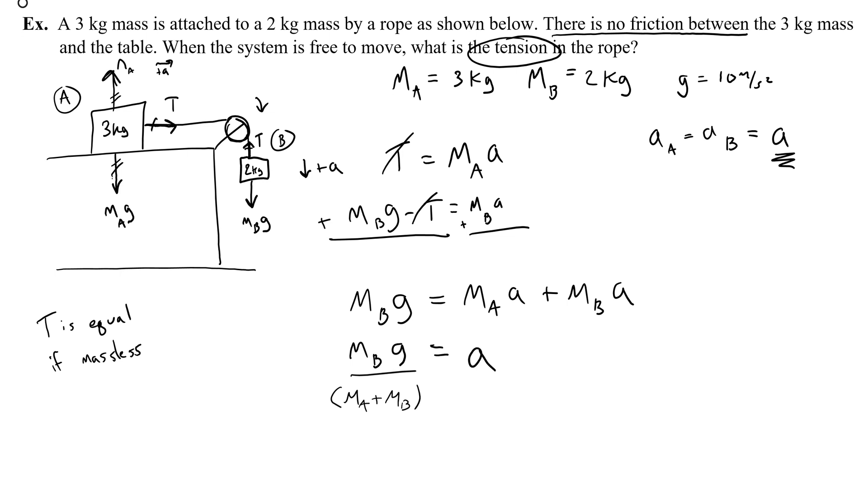So this is my equation for the acceleration. And now I'm going to plug in the masses and g to get a number for my acceleration. So the mass of B is 2 kilograms times 10 meters per second squared divided by the mass of A is 3 kilograms, and the mass of B is 2 kilograms. So 20 over 5, which 20 over 5 is 4. So the acceleration is 4 meters per second squared.